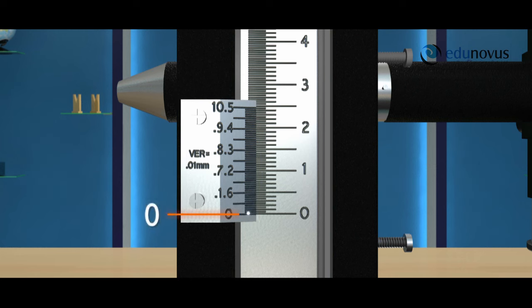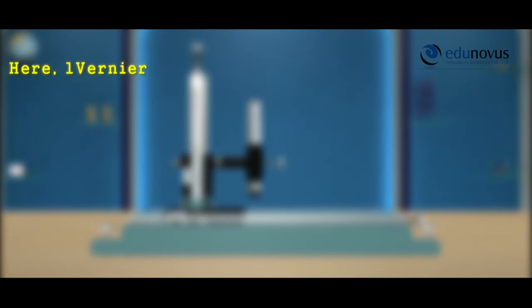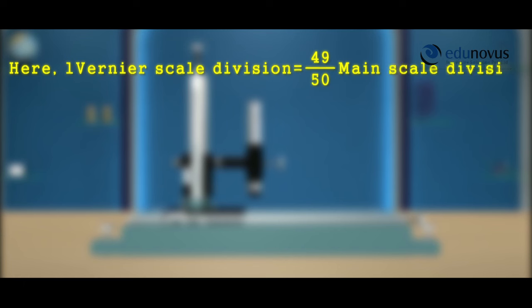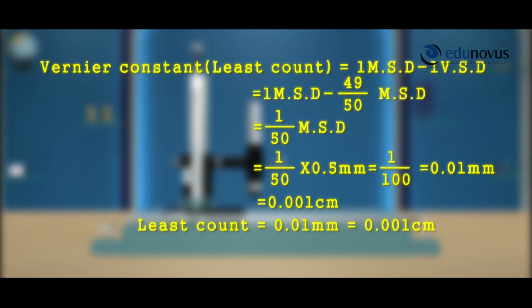Now let us find the least count of the traveling microscope. Here, 50 divisions of the vernier scale equal 49 divisions of the main scale. So one vernier scale division equals 49/50 main scale divisions. Since the least count is defined as the difference between one main scale division and one vernier scale division, least count = 1 MSD − (49/50) MSD = 1/50 MSD = 0.01 millimeters.